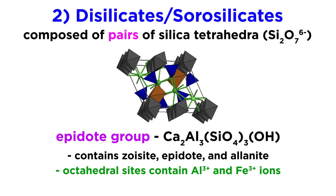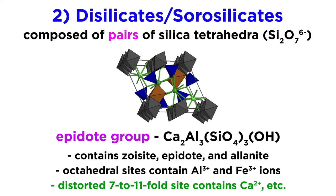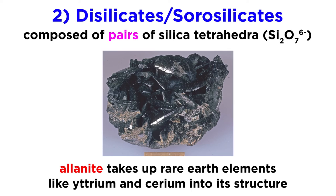These minerals are chemically complex, with three octahedral sites typically containing aluminum and ferric iron, and a distorted 7- to 11-fold site that contains larger cations like calcium. The mineral allanite is known for taking up rare earth elements like yttrium and cerium into its structure, where they substitute for calcium in the large cation site, making it a valuable ore material.